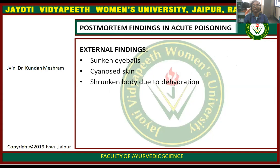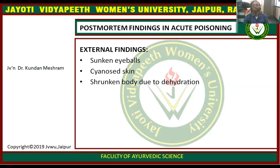Post-mortem findings in acute poisoning — external findings: sunken eyeballs, cyanosed skin, and shrunken body due to dehydration. Internal findings: in some cases, mouth, pharynx, and esophagus may be inflamed or ulcerated. Erosions are found in the stomach; edematous and red mucosa especially in the pyloric region — stomach mucosa resembles red velvet. Small intestinal mucosa is pale, violet, and inflamed. Liver, spleen, and kidney are congested, swollen, and show fatty changes. Brain shows edema with patchy necrosis or hemorrhagic encephalitis.